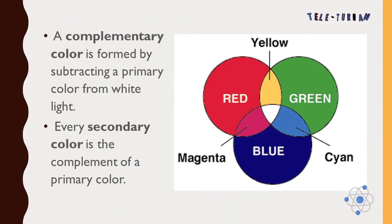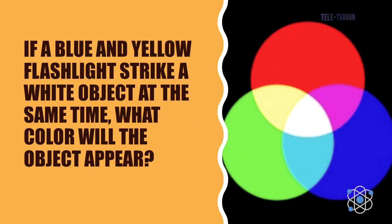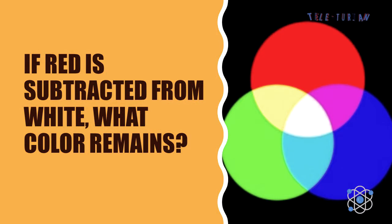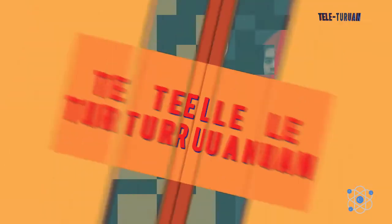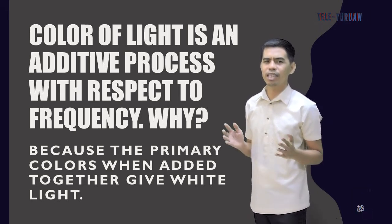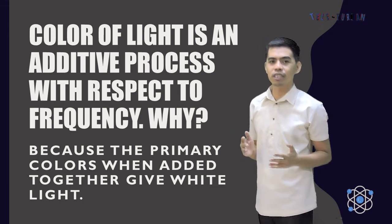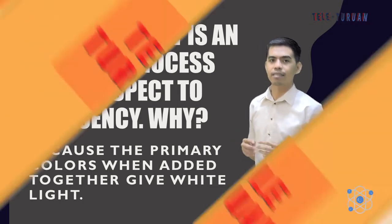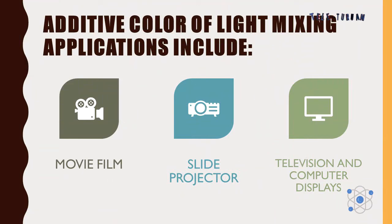A complementary color is formed by subtracting a primary color from white light. Every secondary color is the complement of a primary color. If a blue and yellow flashlight strike a white object at the same time, what color will the object appear? If red is subtracted from white, what color remains? Color of light is an additive process with respect to frequency, because the primary colors, when added together, give white light. Additive color mixing applications include movie film, slide projector, and television and computer displays.